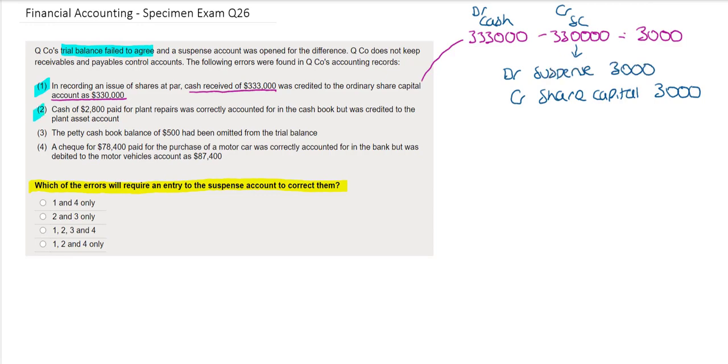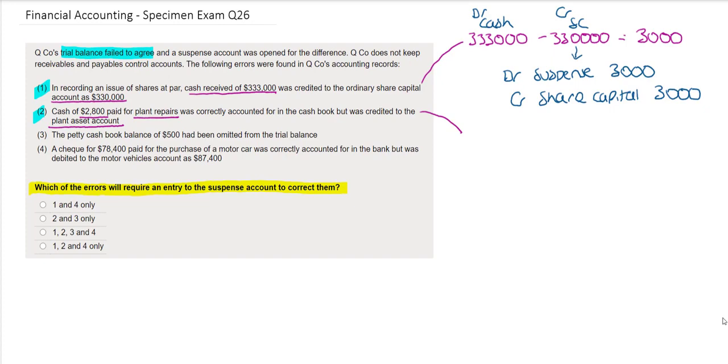In our second error they tell us that cash of $2,800 paid for plant repairs was correctly accounted for in the cash book but was credited to the plant asset account. So therefore what they have done is to credit the cash account and to credit the plant asset account. What should have happened as it is a repair would have been to debit the repairs expense account and credit cash.